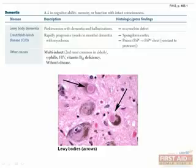Creutzfeldt-Jakob disease, or CJD, is a prion disease that presents as rapidly progressive dementia. Over merely weeks to months, there is variable focal involvement of the CNS, including myoclonus or extrapyramidal signs such as rigidity, bradykinesia, tremor, dystonia, chorea, or athetosis. Prions are infectious proteins and are a very rare etiologic cause of dementia. There is no treatment for CJD and death usually results within seven months. Histologically, one would see a spongiform cortex.